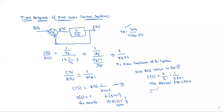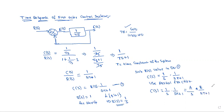C(s) is equal to 1 by S into 1 by ST plus 1, which equals 1 by S(ST plus 1). Now we apply partial fractions, writing this as A/s plus B/(ST plus 1).